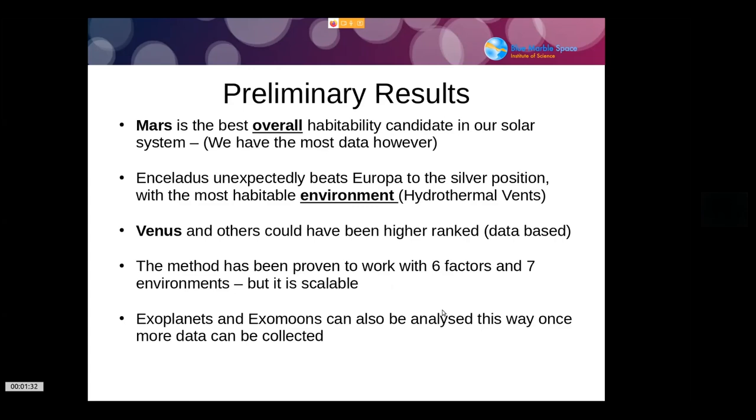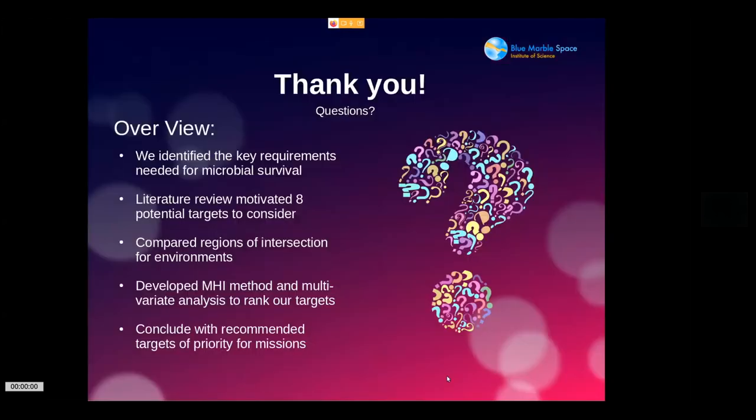The method works for this amount of factors—six factors, seven environments—but it is scalable. In the future, the more we learn about different Earth environments here, different niches that microbes can survive in, and we collect more data on each one of our environments and different targets, we will be able to scale that out. There is no reason why in the very far future, maybe when we actually can really probe exomoons and exoplanets, we can also apply this method too.